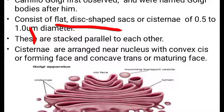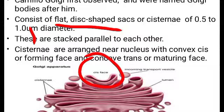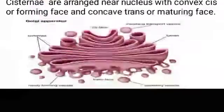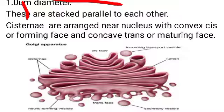The Golgi cisternae are concentrically arranged near the nucleus. The convex end is called the cis end or forming end, and it faces toward the nucleus. The concave end is the trans or maturing end, facing away from the nucleus. In the picture, the cis face is near the nucleus and the maturing face faces the outer side.